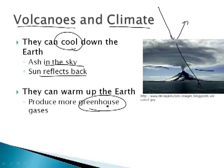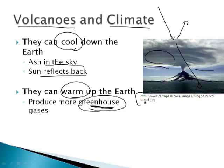The other issue with volcanoes is they can produce greenhouse gases, which will heat up and warm the earth. So which is it — does it cool or heat? It sort of depends on the volcano. The more ash there is, the more it cools it down, and the more greenhouse gases there are, the more it warms it up. So it's probably a wash, but there have been notable instances.